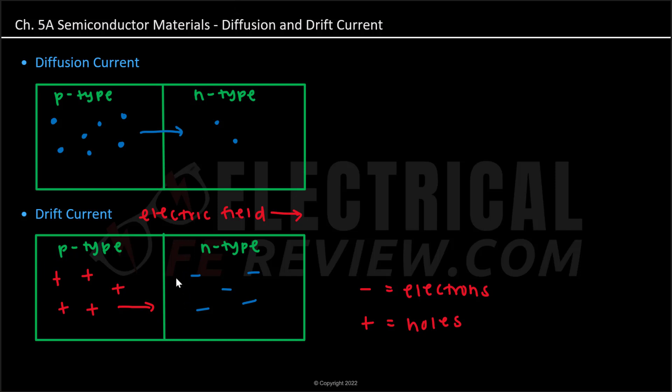Whereas for electrons, we know that they move in the opposite direction of the electric field. So in this case, they would be moving to the left.